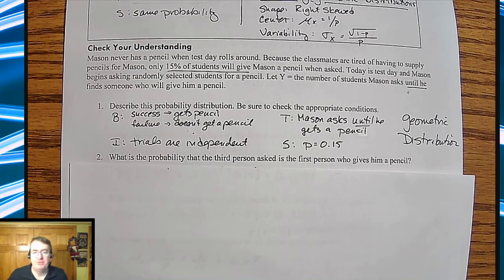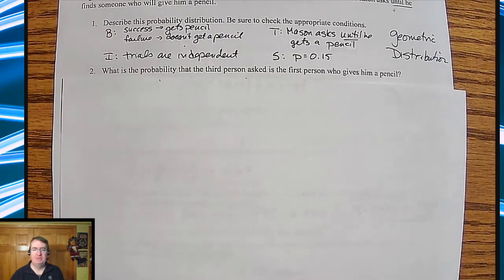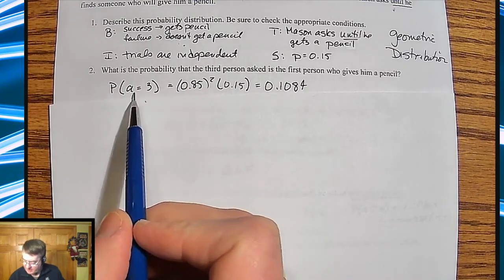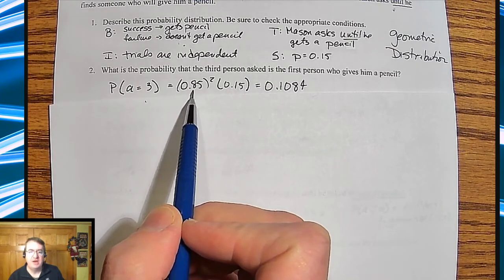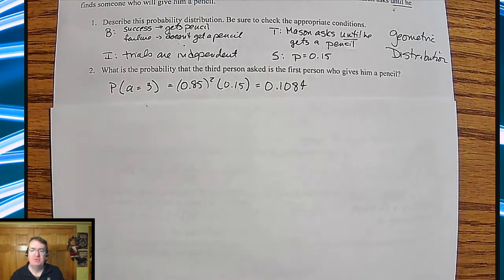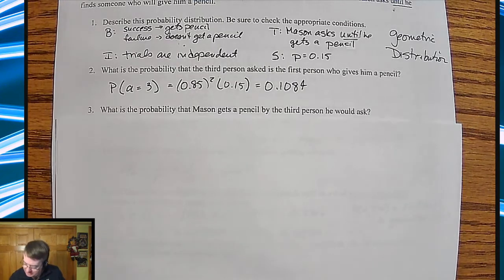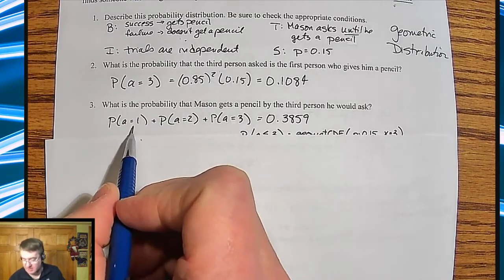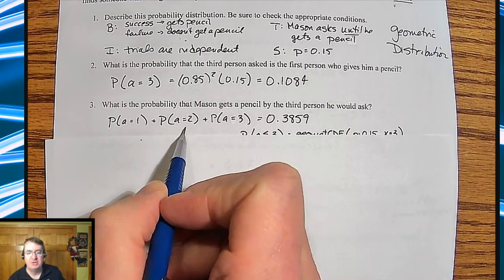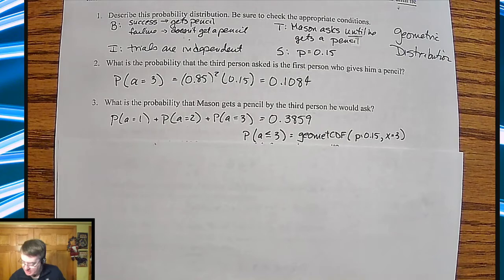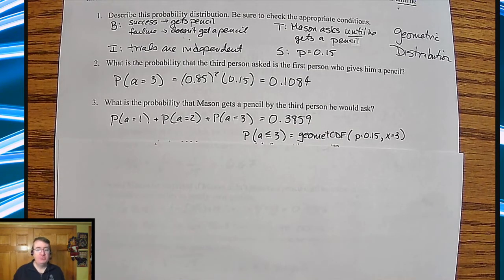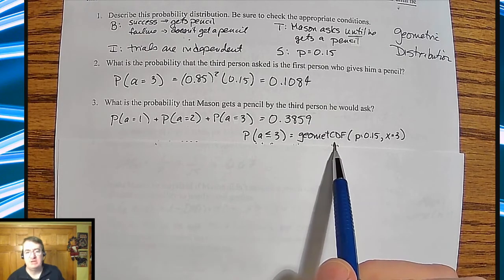What's the probability that the third person asked is the first person who gives him a pencil? So the probability, I did A for asking, the number of asks, you've got the failures raised to the second power times 0.15, so it's about 10.84% chance. The probability that Mason gets a pencil by the third person, you add those up and you get 0.359.